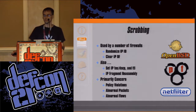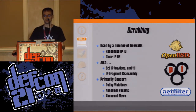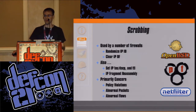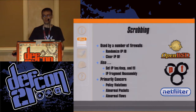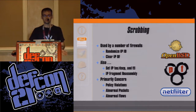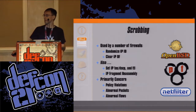Starting with scrubbing: PF, pfSense, netfilter — all firewalls. They randomize the IP ID, or have the option to randomize the IP ID, clear the IP do-not-fragment field. In addition, netfilter allows you to set the IP type of service and the TTL. All three solutions do IP fragment reassembly.